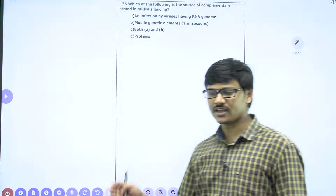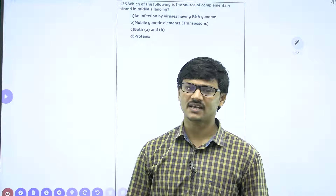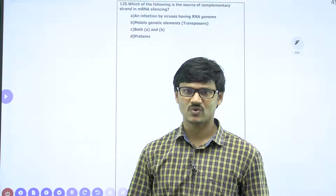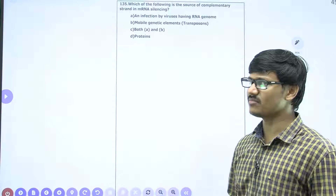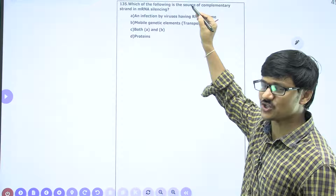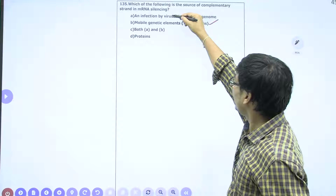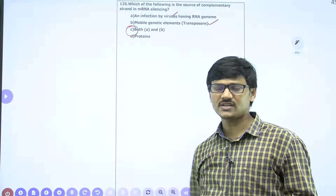The last question: which is the source of the complementary strand in mRNA silencing? RNA interference is the silencing of mRNA, and we use dsRNA — double-stranded RNA — where one strand is sense and the other is antisense. This dsRNA can come from two sources: one is jumping genes, also called mobile elements or transposons, and the other is any virus having RNA as genetic material. The answer is both A and B. That is all the key answers for today's test.